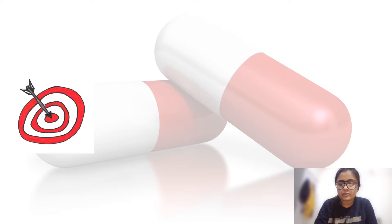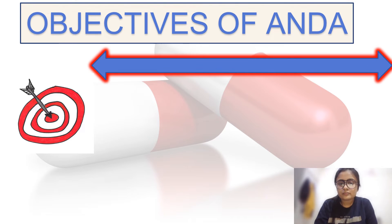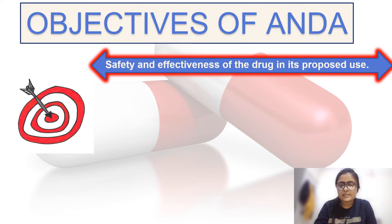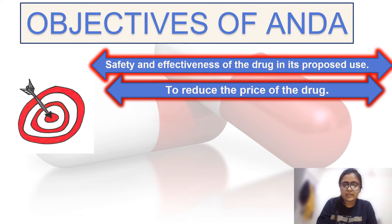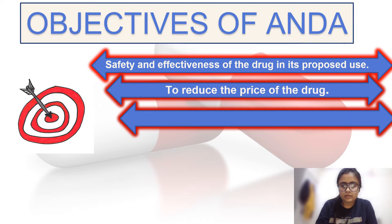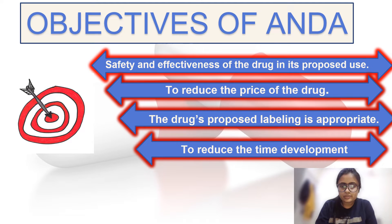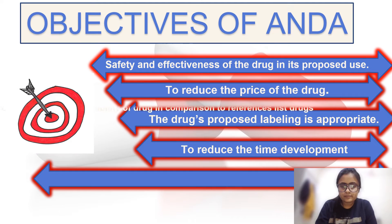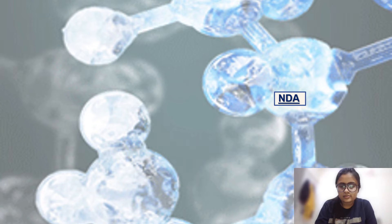Bioequivalence data, chemistry and microbiology data, plant inspection, and drug labeling information are regarded as the main areas of focus for generic drug application reviewers. The objectives of ANDA include: safety and effectiveness of the drug in its proposed use, reducing the price of the drug, ensuring drug labeling is appropriate, reducing time of development, and increasing the bioavailability of the drug in comparison to the reference listed drug.